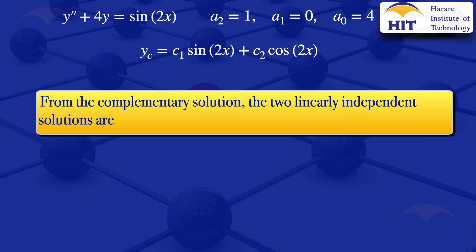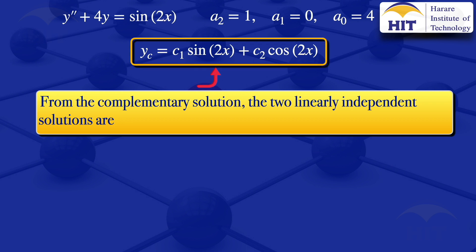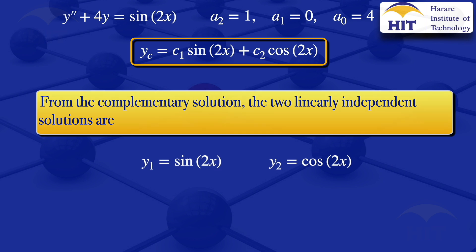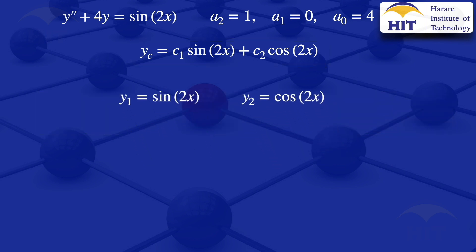From the complementary solution, we can extract the two linearly independent solutions. Looking at each term excluding the constants, we have y1 = sin(2x) and y2 = cos(2x).